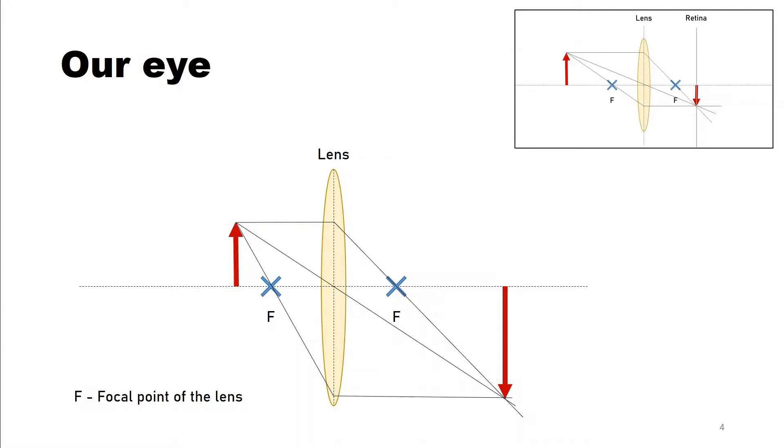But if you move too close and you can experience that yourself, if you take a pen in front of you and move it closer to your eye, then at a certain point it becomes blurry. And that is because the object is not focused on spot on the retina anymore, but behind of it.